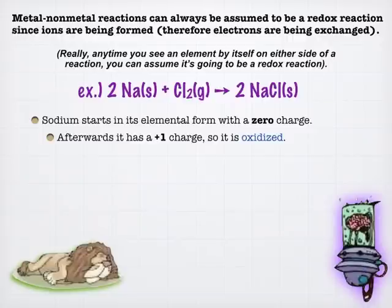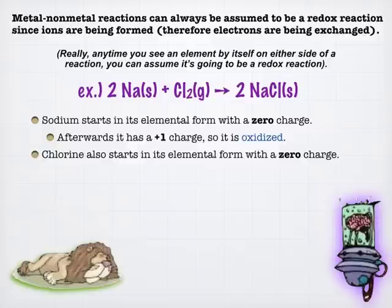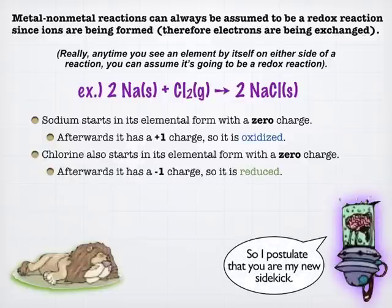Now, again, there's no oxygen in this reaction, but that's irrelevant. Chlorine also, in this case, is starting with a zero charge, but now it's getting a negative one charge because it's got sodium's electron. And so in this case, it is being reduced. So the chlorine's being reduced because it's gaining electrons, and the sodium is being oxidized because it's losing electrons.